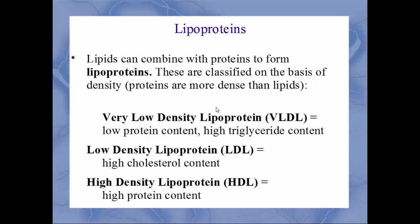Next we'll talk about lipoproteins. Lipids will sometimes combine with proteins, forming the combination called lipoproteins. These are classified by how dense they are, and there are three classifications. It's key to remember that proteins are much more dense than lipids. The first one is VLDL — very low density lipoprotein. These have very low protein and a very high amount of triglycerides, which is why it's a very low density lipoprotein.